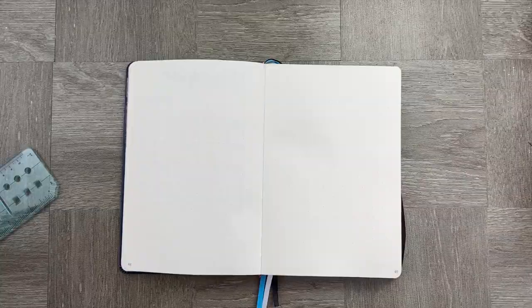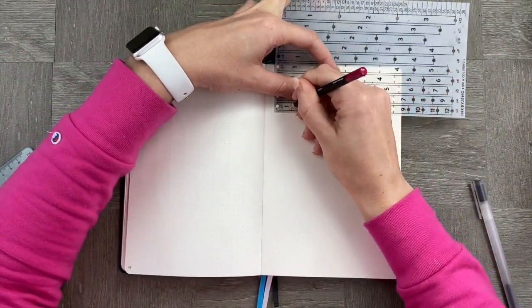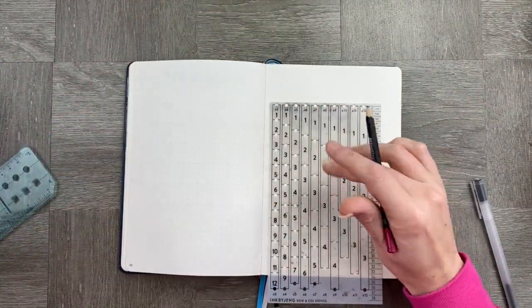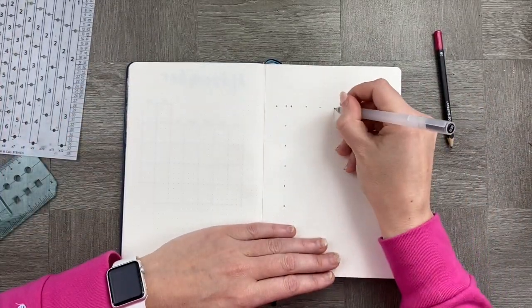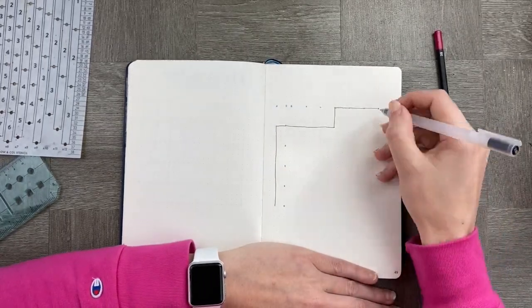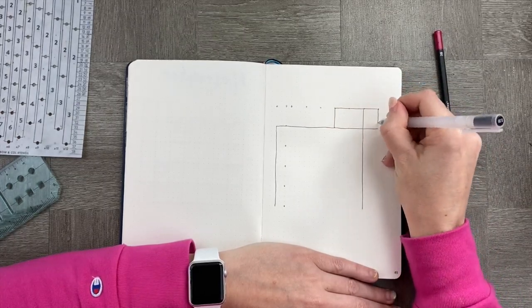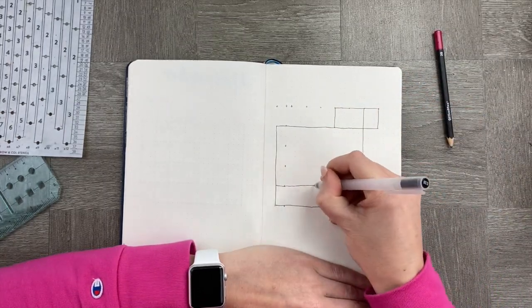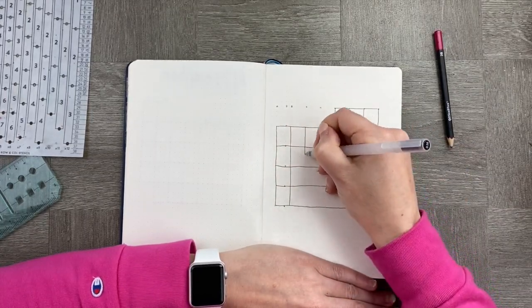All right, the first thing you're going to see me drawing here is just my basic calendar spread. I'm going to have it up at the front of my monthly, and I'm going to have seven days. I'm honestly just free handing it. The only thing I've measured up are the days.